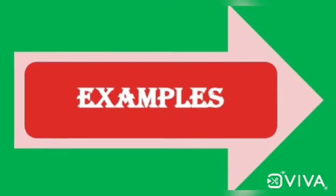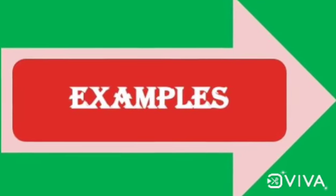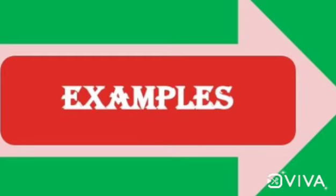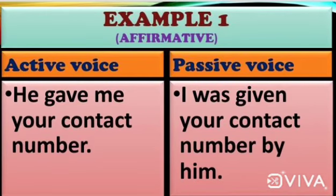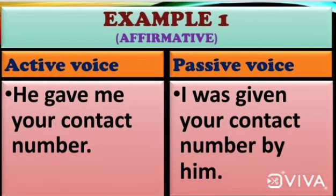Now let us go through the examples for transformation. The first example is: 'He gave me your contact number.' Here, 'he' is the subject and 'your contact number' is the object — they interchange places. 'Me' is the indirect object, which is taken to the beginning. The verb 'gave' is in past tense, so it becomes 'was given.' Therefore: 'I was given your contact number by him.'